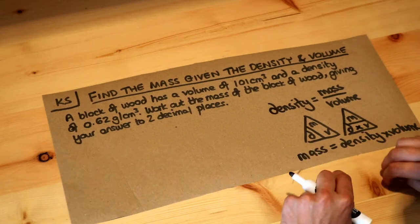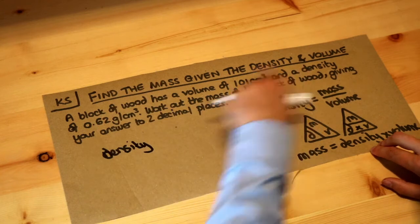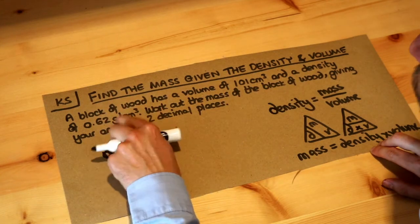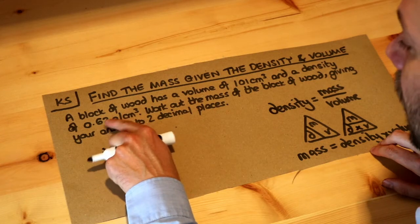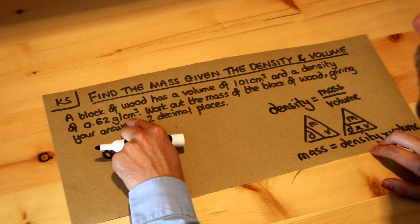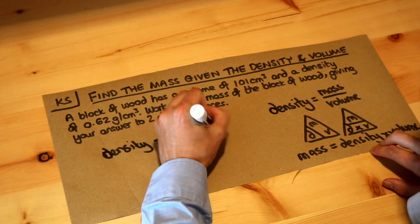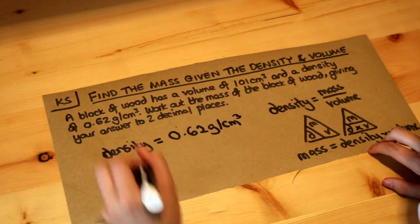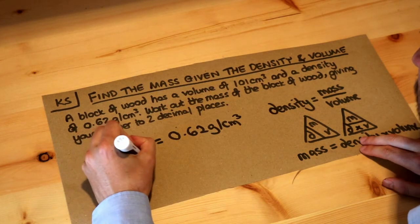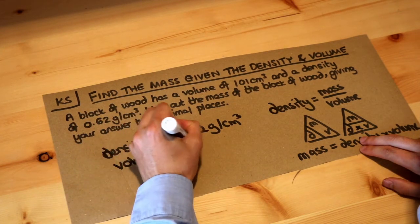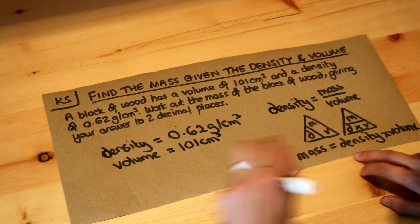So this is the formula I'm going to use. Let's write down firstly what the density is. It says the density is 0.62 grams per centimeter cubed. That's how we read it—you have 0.62 grams for each centimeter cubed volume. And then we've also got the volume of this wooden block, so the volume is 101 centimeters cubed, and we're trying to work out the mass.